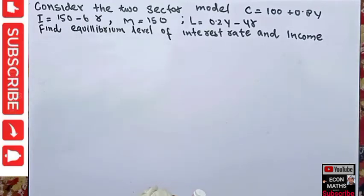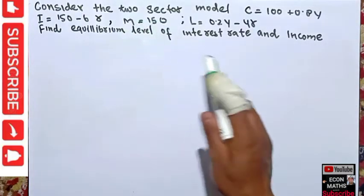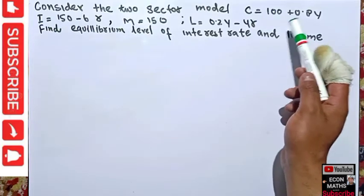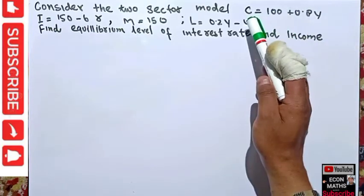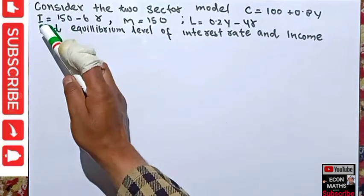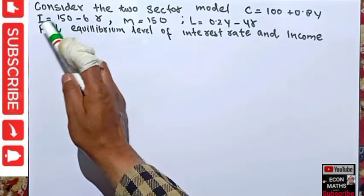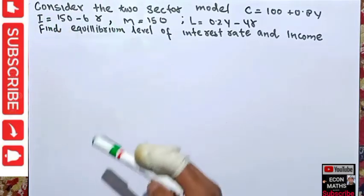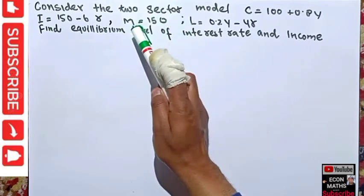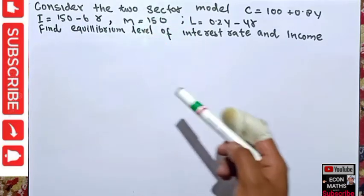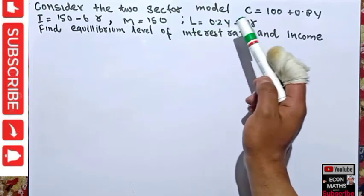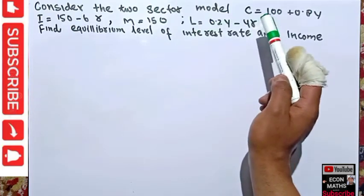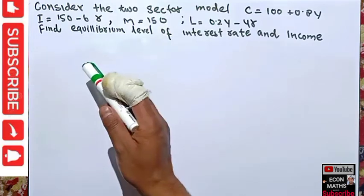Hi, this is Halal. In this video on mathematical economics series, we will solve a numerical on the IS-LM model. The question considers the two-sector model: C = 100 + 0.8Y where C is consumption, Y is the level of income; I = 150 - 6R where I is investment and R is the rate of interest; M = 150 where M is the money supply; and L = 0.2Y - 4R where L is the demand for money.